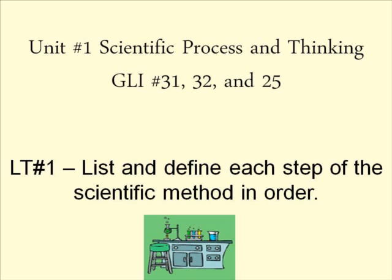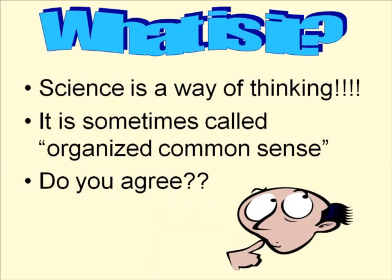So this leads us to the next question: what is the scientific method? Well, first of all, science is a way of thinking. It's not only a way of thinking, but it's a process scientists use to solve problems. It's sometimes called organized common sense, because as you go through the scientific method, it really is common sense — a series of steps you probably do every day without even thinking about it.